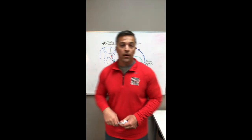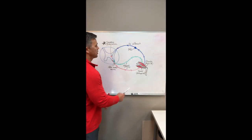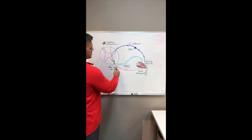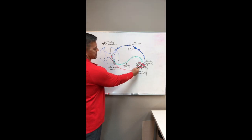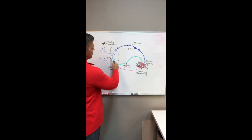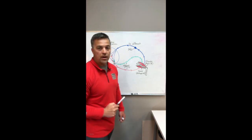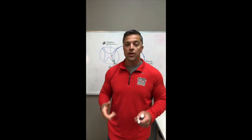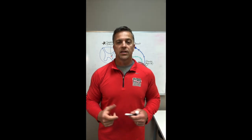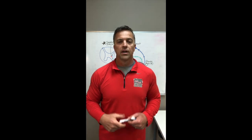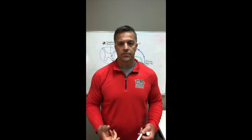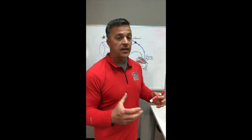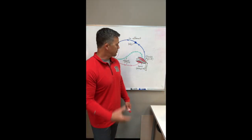If it goes through the inhibitory interneuron, we get an inhibitory message back to our antagonist. So with a normal contraction, the message says 'contract, contract, contract.' But if it goes through the inhibitory interneuron, instead of saying 'contract,' it sends an inhibitory signal — meaning the antagonist contracts less.